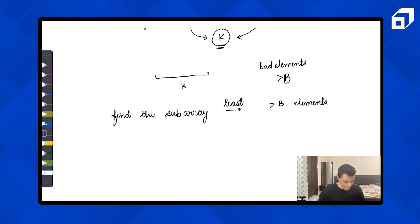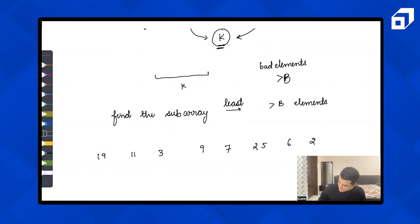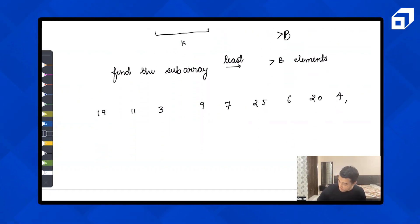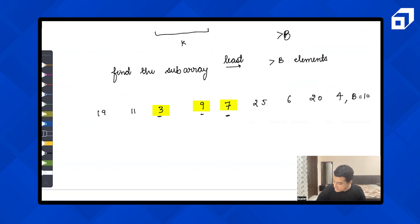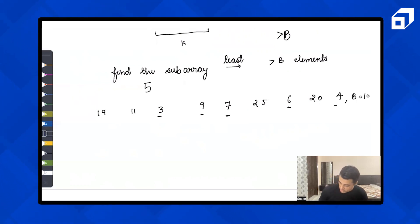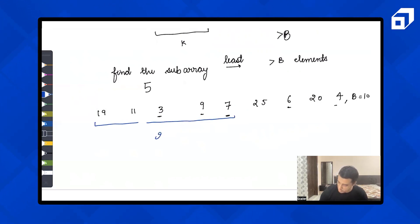Let's revisit the second example: [19, 11, 3, 9, 7, 25, 6, 20, 4] with b equal to 10. First, count the good elements: 3, 9, 7, 6, and 4 — there are 5 good elements, so k equals 5. Now look at the first subarray of size 5: [19, 11, 3, 9, 7]. It contains 2 bad elements, meaning 2 swaps would be needed if we chose this subarray.